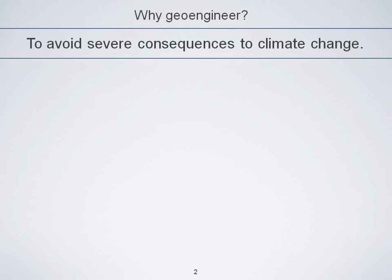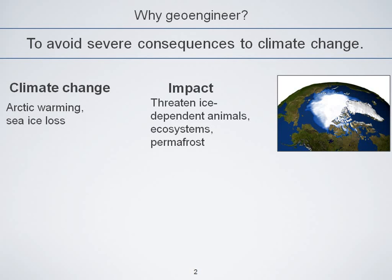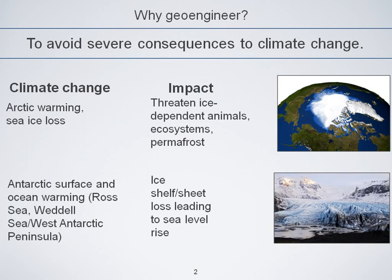Some of the severe consequences I'm going to talk about are Arctic warming and sea ice loss, which is threatening to ice-dependent animals and ecosystems, and permafrost melt. On the other side of the globe, Antarctic surface warming and ocean warming can have implications for ice shelf and ice sheet melt, leading to sea level rise. I'm focusing on the poles because they are the most sensitive part of the globe in terms of climate change, and especially in the Arctic, it's projected to warm more than the global mean.